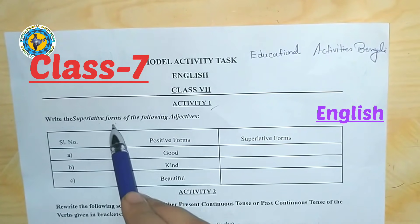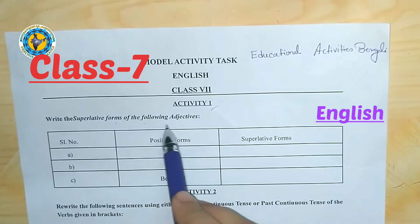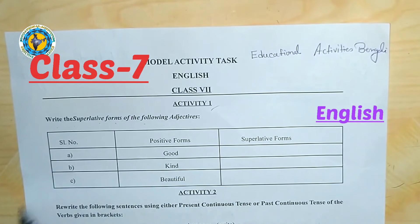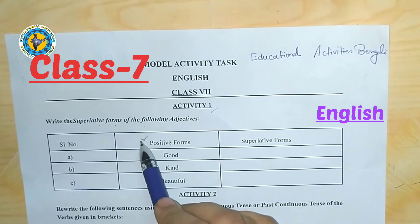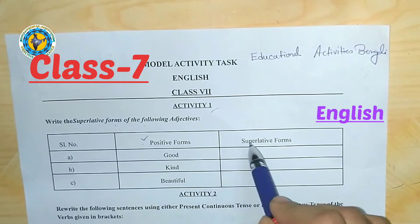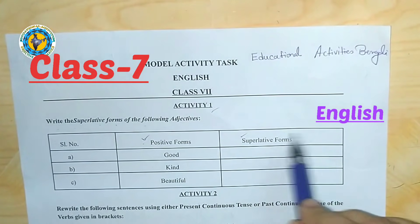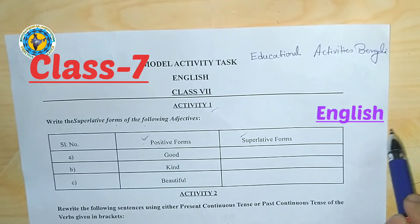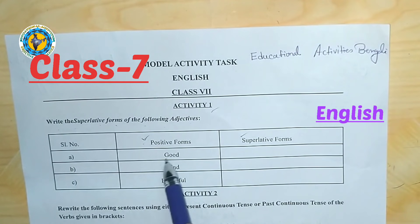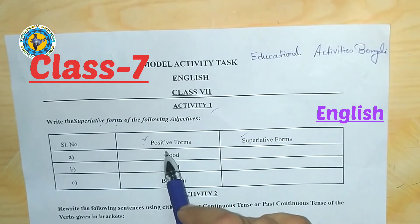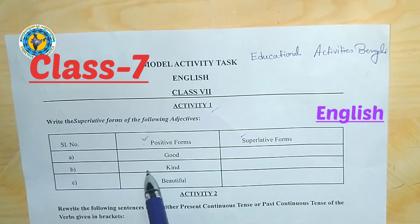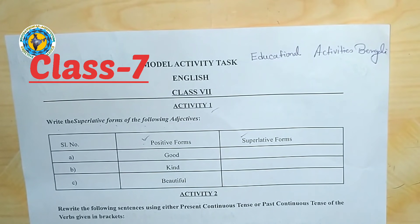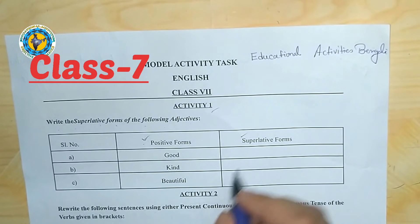Welcome to Educational Activities Bengali channel. Today we will look at the following adjectives. An adjective can have a positive form, a comparative form, and a superlative form. For example, 'good' — the comparative form is 'better' and the superlative form is 'best': good, better, best.